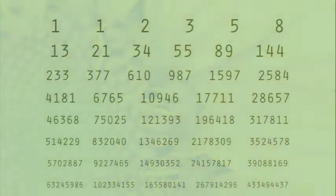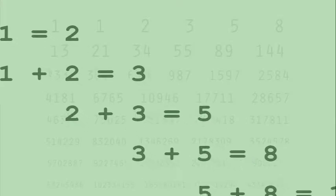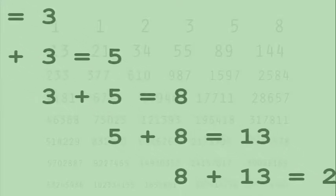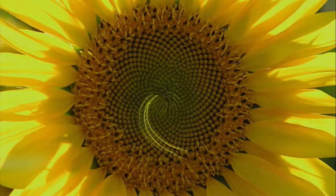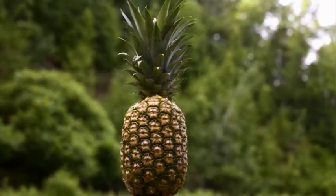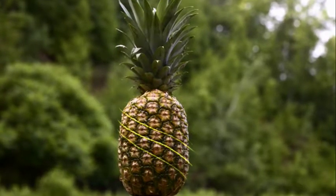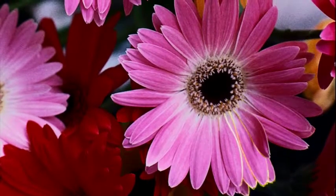As we look even closer, we can discern a fascinating mathematical relationship between this golden angle and a series of numbers called the Fibonacci sequence. In this progression, each number is determined by adding the previous two numbers together. Interestingly, these Fibonacci numbers can often be observed in plants. This sunflower has 34 spirals in one direction and 55 going the other way — both of these numbers are in the Fibonacci sequence. A pineapple will often have 8 or 13 spirals. Flowers with a spiral growth pattern tend to have a Fibonacci number of petals.